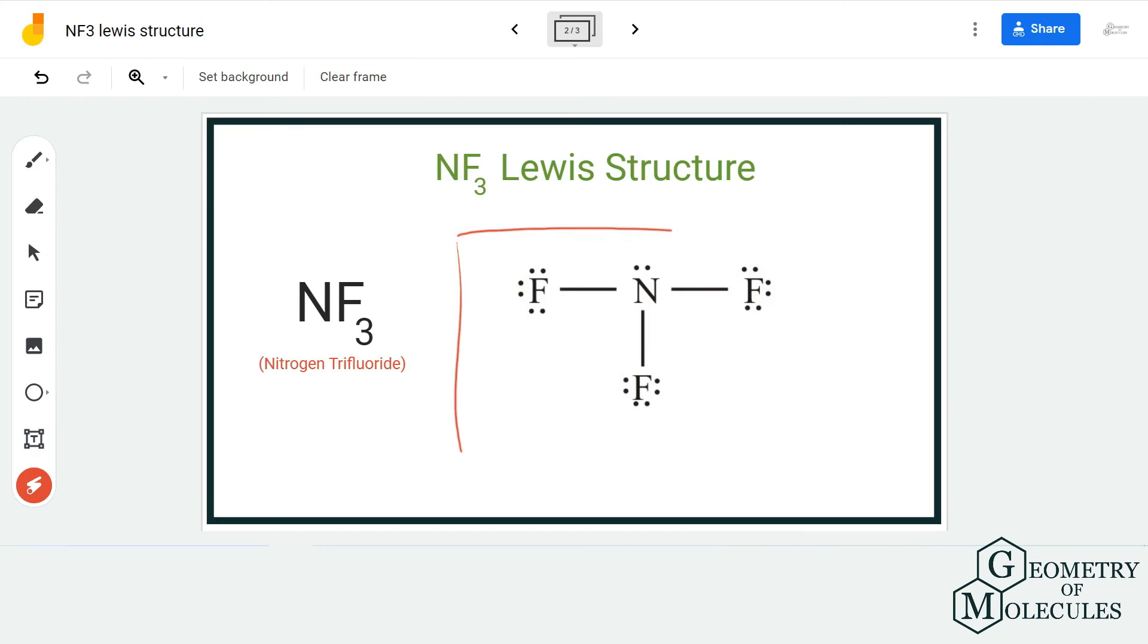So this is the Lewis structure of NF3. However, you have to remember that the electrons of the nitrogen that are not participating in any bond formation are considered as non-bonding pairs of electrons or lone pairs of electrons. This is something that you can remember for determining its molecular geometry and polarity. This is the Lewis structure of NF3 in which there are three single bonds formed between nitrogen and fluorine atoms.